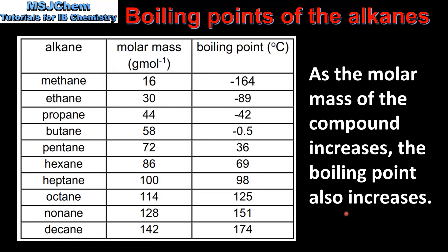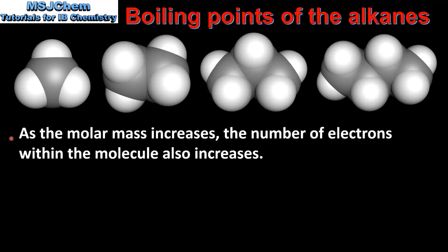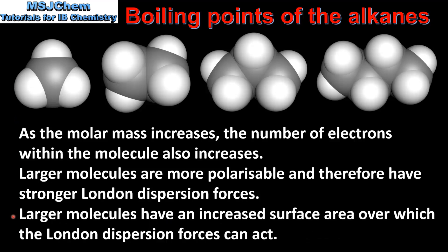Here we can see space-filling models for the first 4 members of the alkane homologous series, from methane to butane. As the molar mass increases, the number of electrons within the molecule also increases. Larger molecules are more polarisable and therefore have stronger London dispersion forces. Additionally, larger molecules have an increased surface area over which the London dispersion forces can act. It is for these two reasons that an increase in molar mass leads to an increase in boiling point.